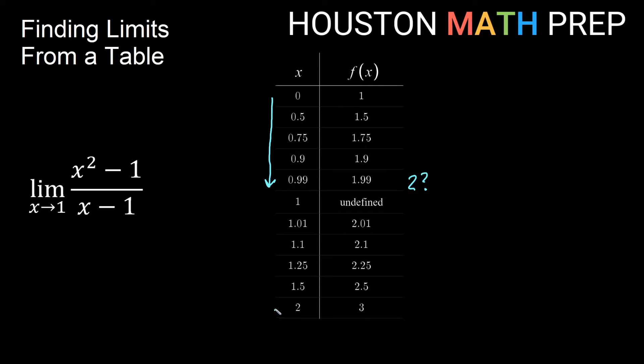As I approach x equals 1 from the right side, so from 2 and then 1 and a half, 1 and a quarter, 1.1, 1.01, you can see it looks like the numbers are getting smaller and smaller toward a positive value of 2 also. So since we seem to be heading toward a y value of 2 from both sides of x equals 1, then we'll go ahead and say that this limit is 2.